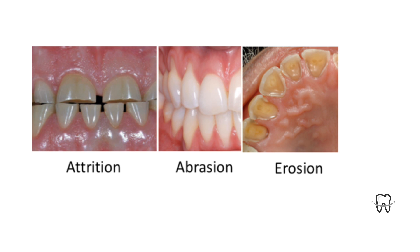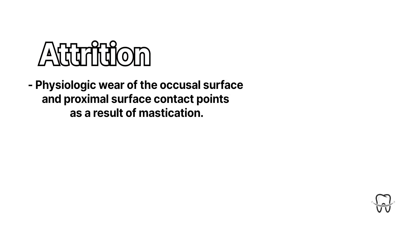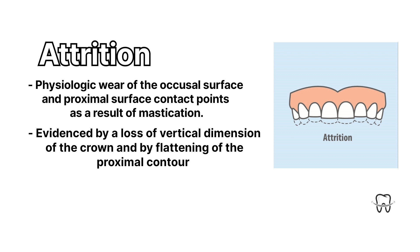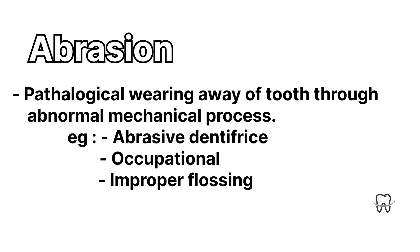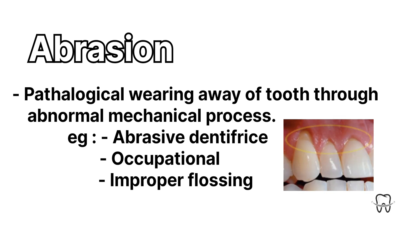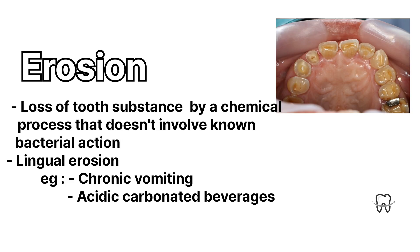Attrition is the physiologic wear of the occlusal surface and proximal surface contact points as a result of mastication, causing masticatory stress and parafunctional habits. Abrasion is the pathological wearing away of the tooth through an abnormal mechanical process, as seen in the picture.